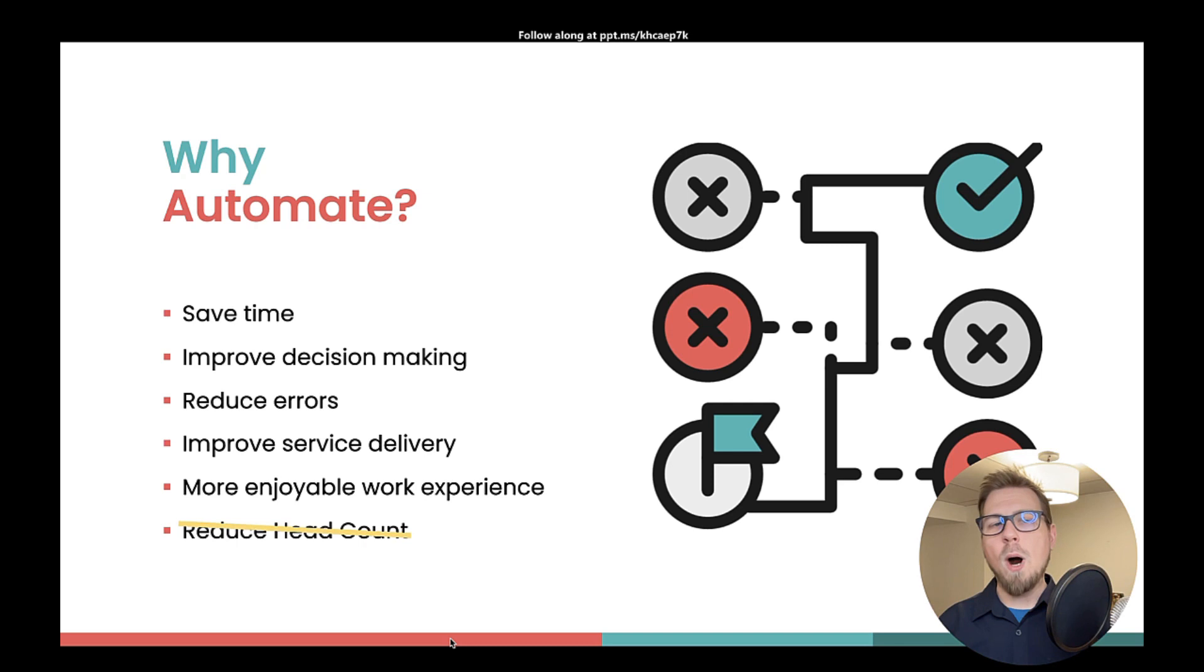So this brings us to why we automate at all. We automate so that we can save time and we can focus on the things that matter. So for your business, these manual processes can take hours compounded on weeks and months and years, and can take time away from the things that actually matter. So automation helps us to save time and improve service delivery.